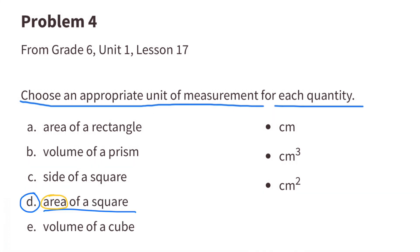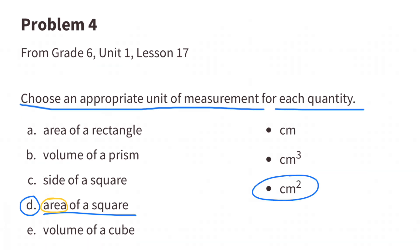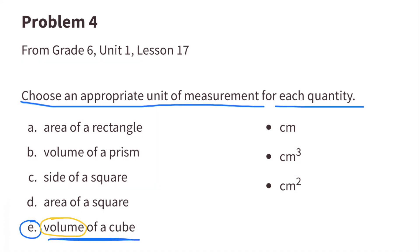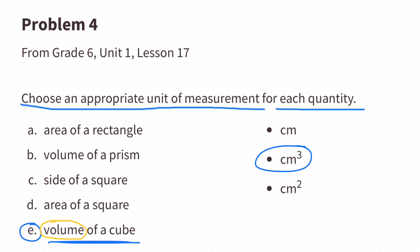Part D: Area of a square. Just like Part A, to find the area you multiply base times height — 2 dimensional — so centimeters to the 2nd power. Part E: Volume of a cube. Again, volume is 3 dimensional: width times length times height, so centimeters to the 3rd power, or centimeters cubed.